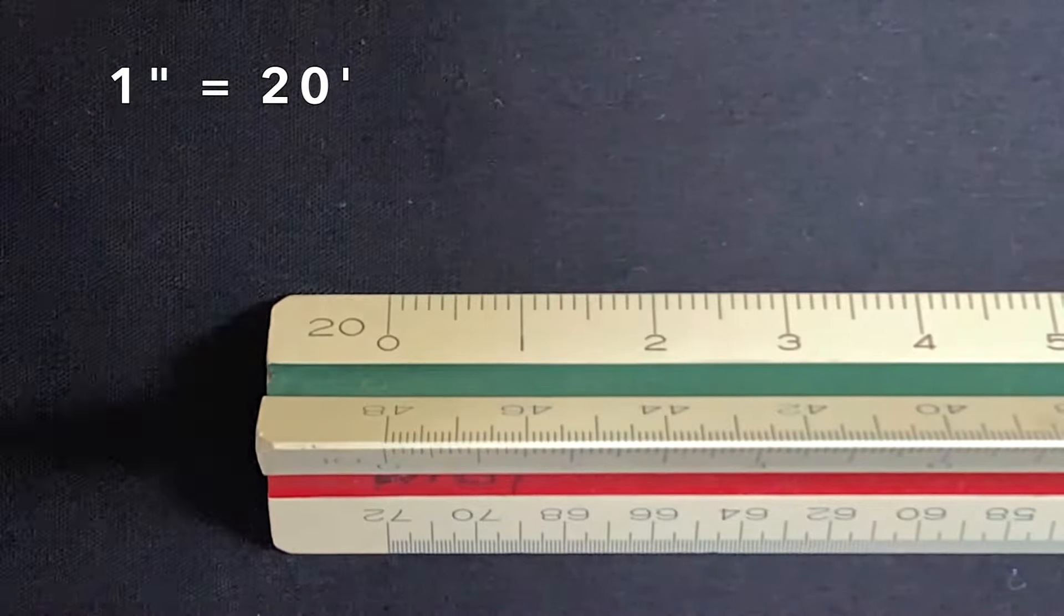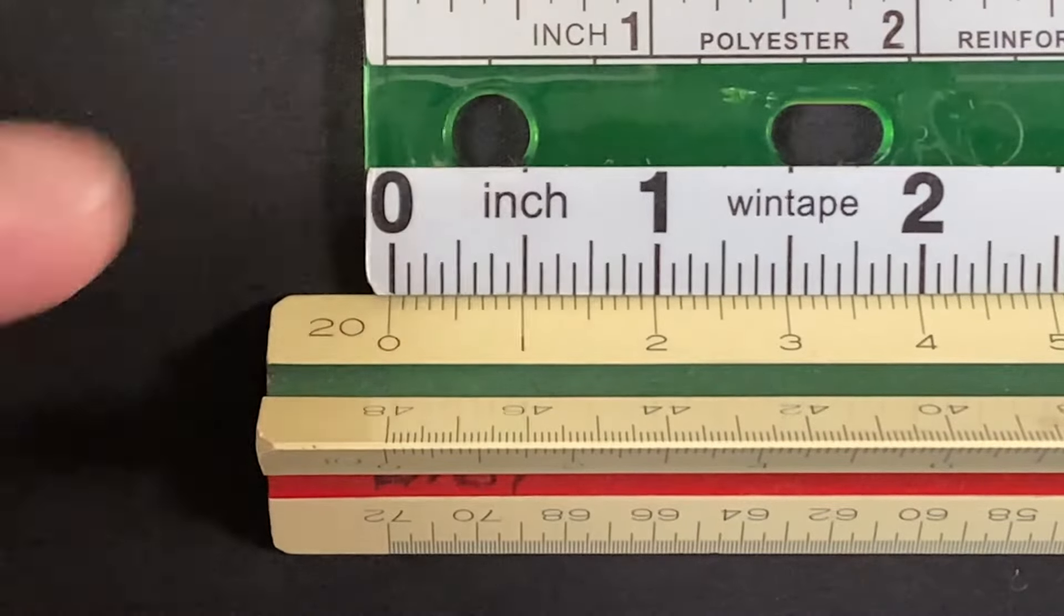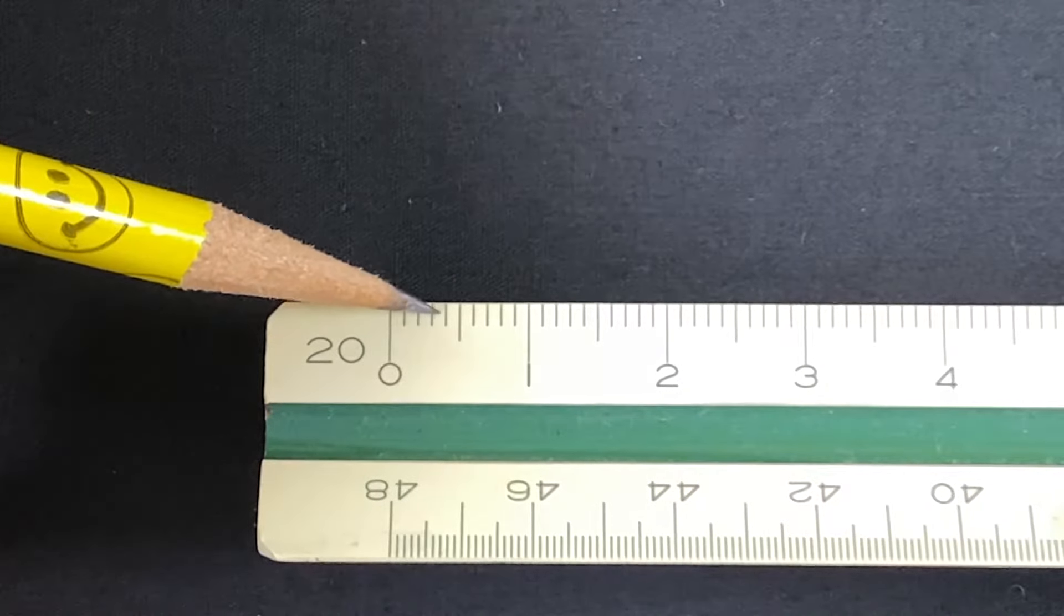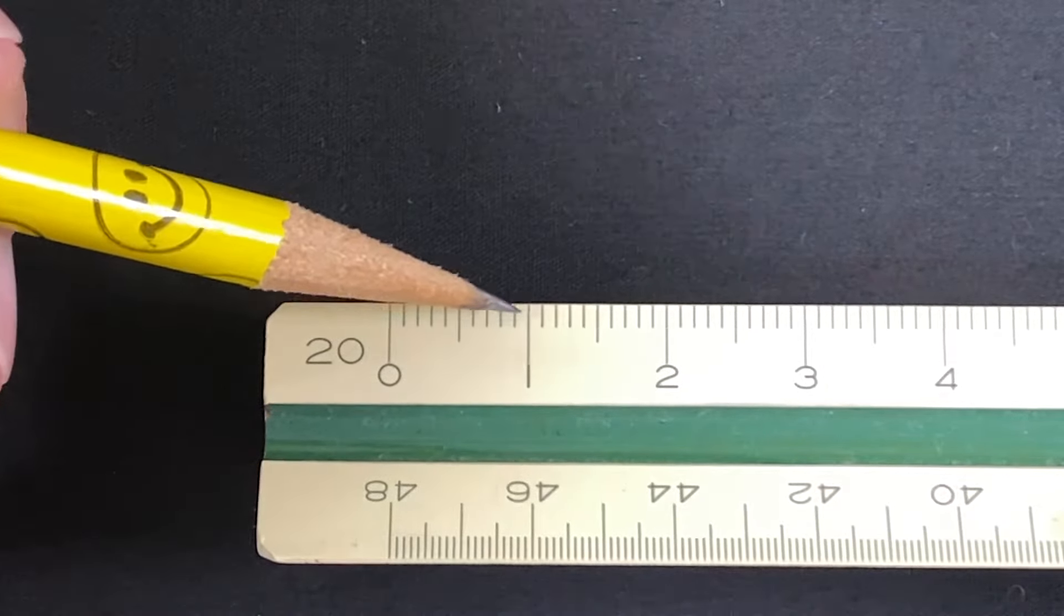And on the 20 foot scale, 1 inch equals 20 feet, but each increment still equals 1 foot, where a half inch equals 10 feet, 1 inch equals 20 feet, 2 inches equals 40 feet.